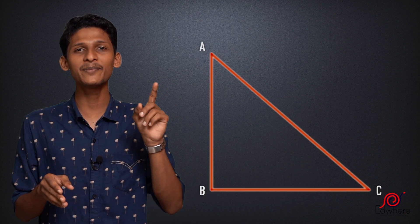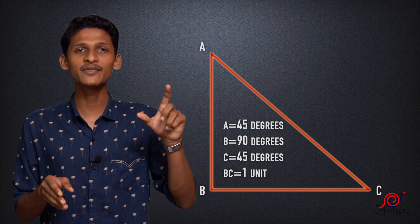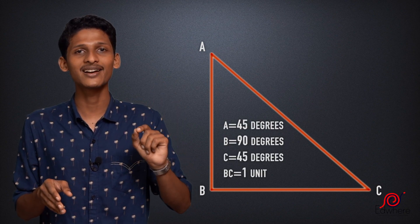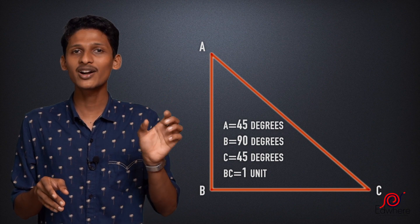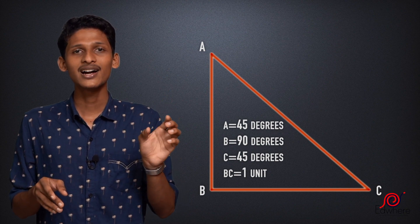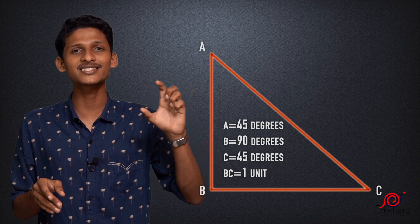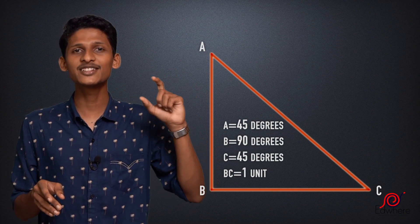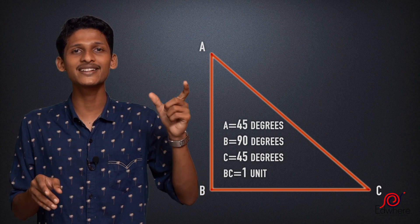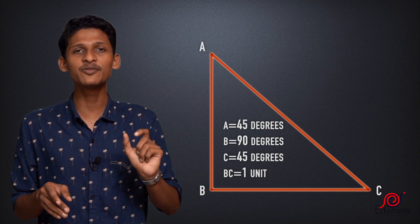I have a triangle A, B, C. B is 90 degrees, and A and C are both 45 degrees. So we have three angles. BC is 1 and AB is 1. That is an isosceles triangle — the two angles are 45 degrees, so the two sides AB and BC are the same, both equal to 1.